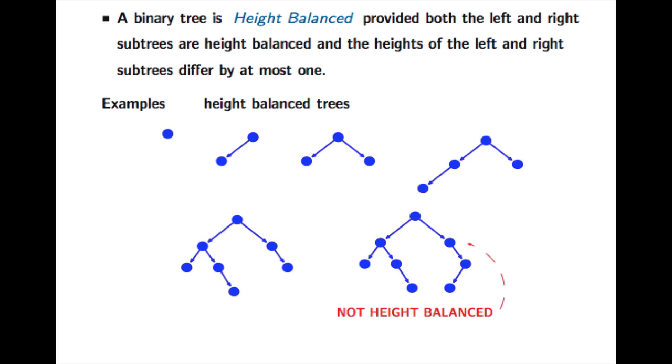So what we define as a height balance tree is a tree where the depth of the left side and the depth of the right side differ by at most one. And also we want the left subtree and the right subtree to be height balanced themselves.